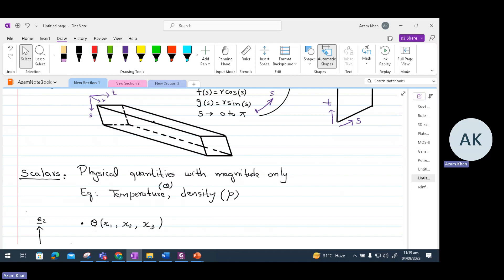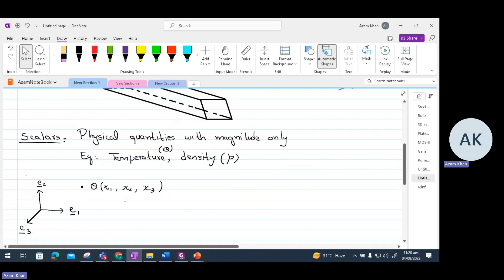Similarly, density of a structure is also a quantity which requires only magnitude and no direction is required. So we might have a composite structure which has got density varying at different points. Density of that composite structure can be defined by the help of three coordinates, X1, X2, and X3, in a Cartesian coordinate system.